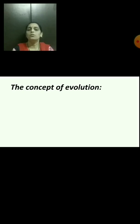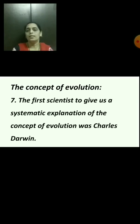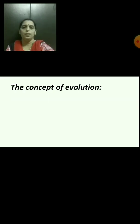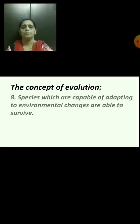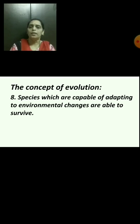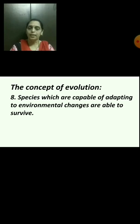The first scientist to give us a systematic explanation of the concept of evolution was Charles Darwin. Species which are capable of adapting to environmental changes — those that can adjust to their surrounding environment — are able to survive.